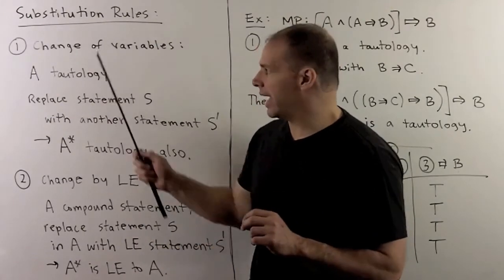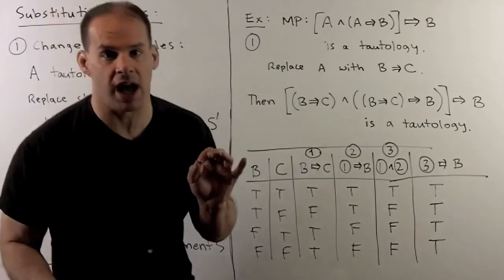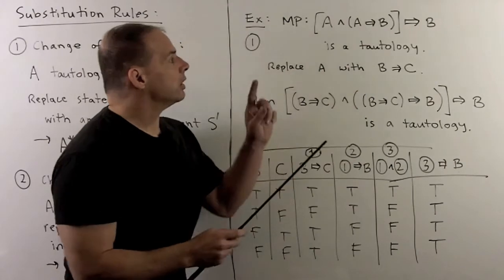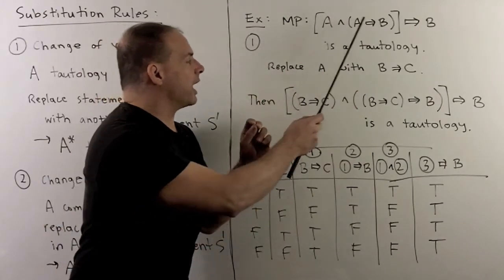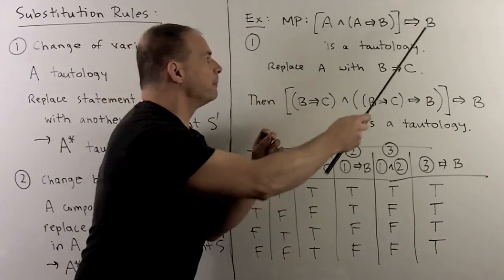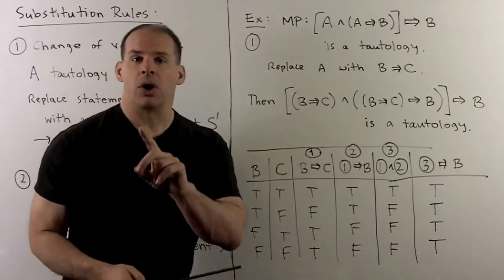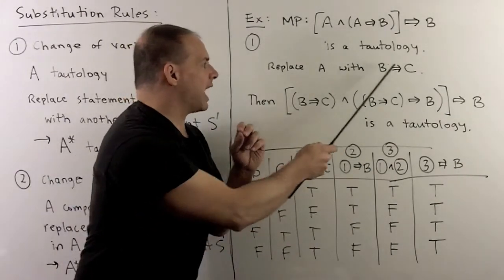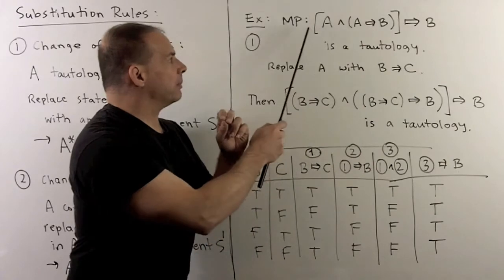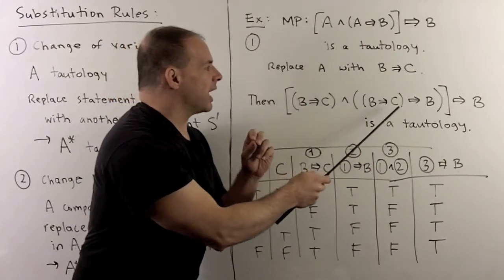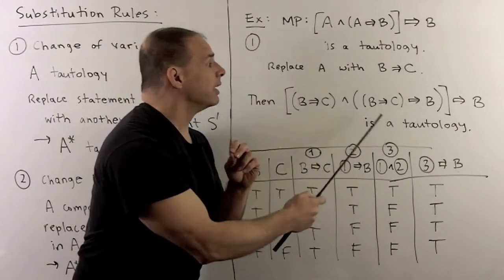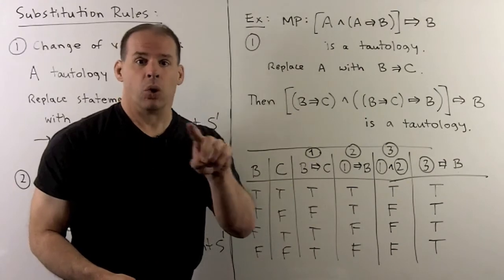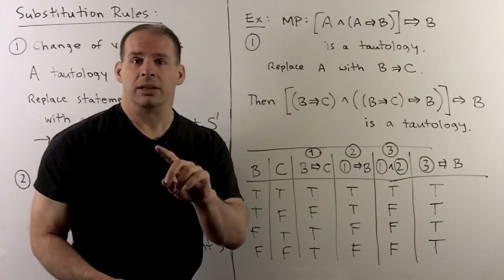Let's consider case one: change using a tautology. We use modus ponens: A and (A implies B) implies B is a tautology. I'm allowed to replace A with any other statement — let's use B implies C. Then we have: (B implies C) and ((B implies C) implies B) implies B, which is also a tautology. That's the rule, but let's actually verify it.